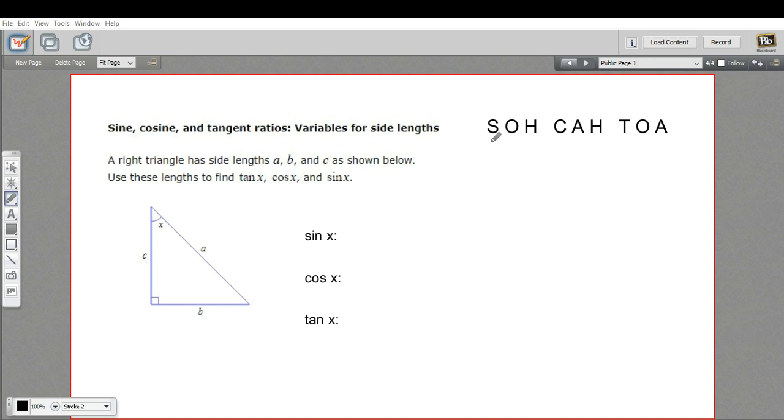Remember, when we find sine, cosine, and tangent, we can use SOH CAH TOA. SOH means sine is opposite over hypotenuse, CAH means cosine is adjacent over hypotenuse, and TOA means tangent is opposite over adjacent.